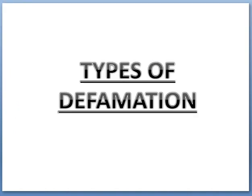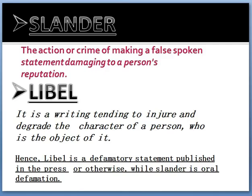Now, the types of defamation. Defamation is divided into two parts: slander and libel. Slander is the action or crime of making a false spoken statement damaging a person's reputation — it is verbal or oral communication. Libel is a written communication tending to injure and degrade the character of a person. Libel is a defamatory statement published in the press or otherwise, while slander is oral defamation.